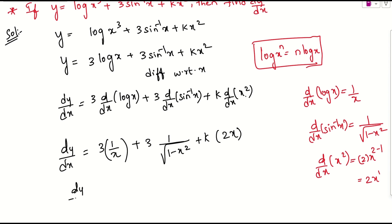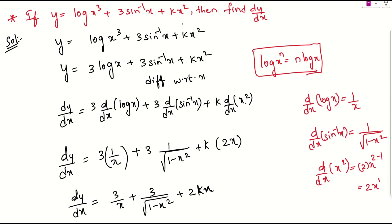So from this, dy by dx equals 3 over x plus 3 over root of 1 minus x squared plus 2kx. Other than that, we can't solve this further. This is the final answer. Thank you.